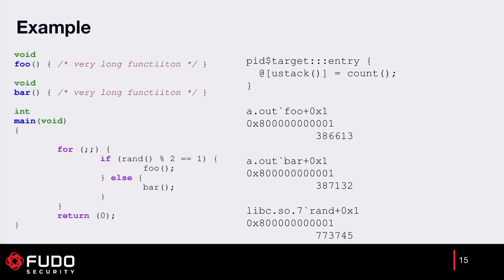We can also track the user stack and aggregate how many times each call path was taken by passing the ustack() function to our aggregation. This allows us to see the full call stack and count how many times each path was taken. It's very useful to have an unstripped binary; otherwise you'll just see function addresses rather than names.